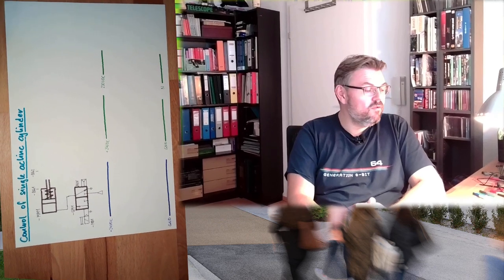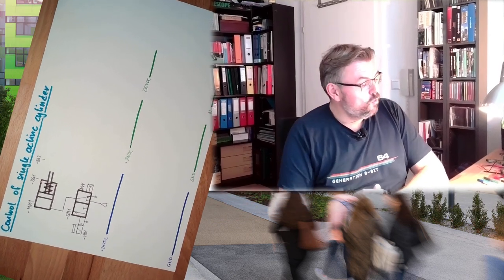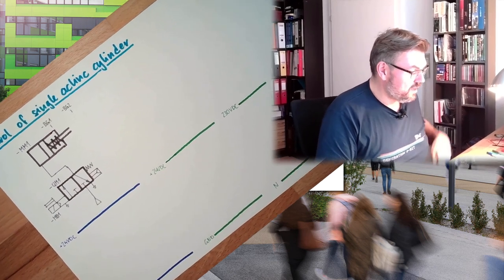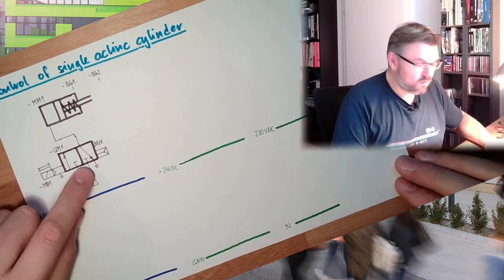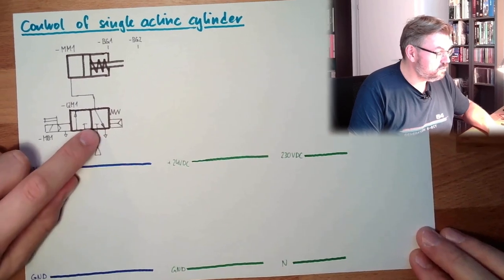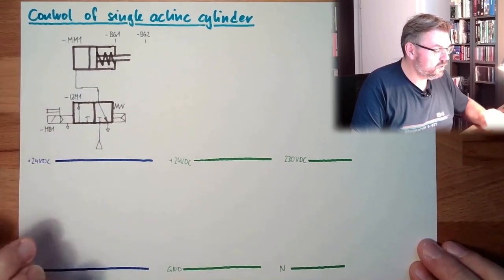Today we want to start small. We want to control a single-acting cylinder. For a single-acting cylinder we need a 3-2 way valve, which will automatically return to its lock-rest position. The cylinder will move inwards by default.